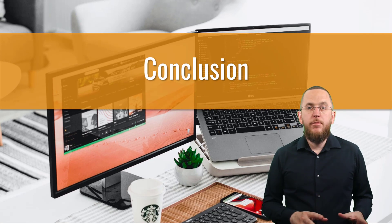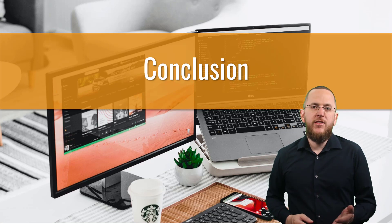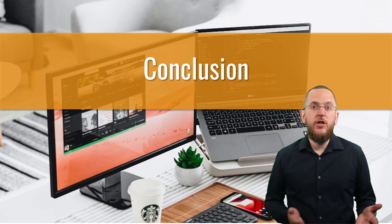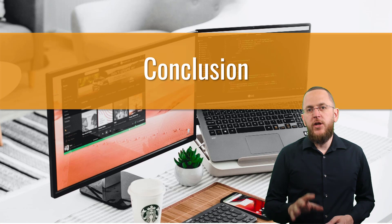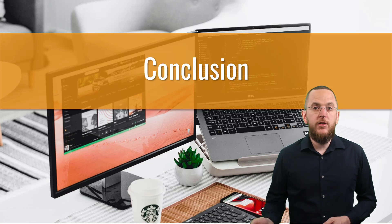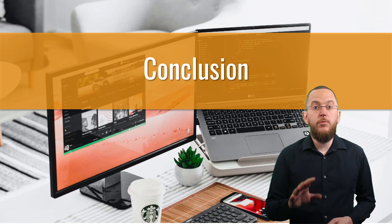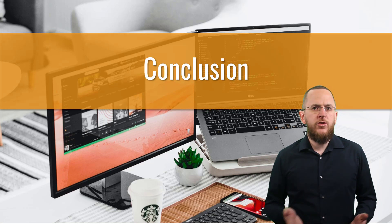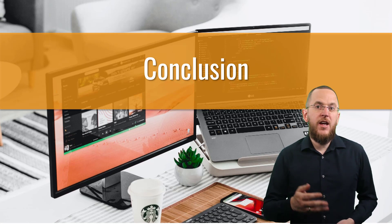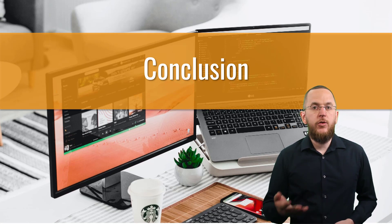All developers using Hibernate 6 should know about the Incubating annotation and the new Incubation Report. Hibernate's development team uses them to warn their users about APIs that might change in future releases. Introducing such an annotation is a great idea because it gives the development team more flexibility when releasing new features and adjusting them until they find a solution that solves most users' needs. But it also introduces the risk that one of the new features you just started using in your application changes and you need to adjust your code to it. We will need to see how often that happens and how severe these changes will be.